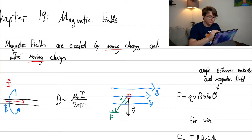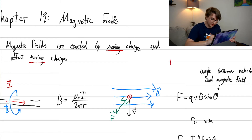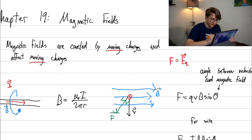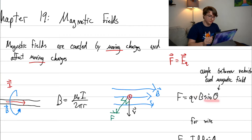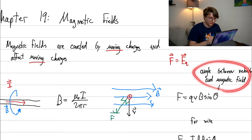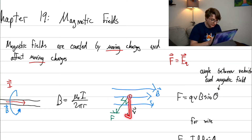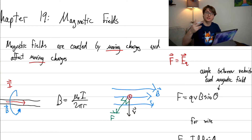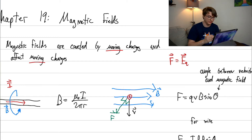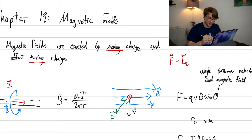There's also a different force law for magnetic fields compared to electric fields. For electric fields it's F = qE (vectors). For magnetic fields, instead of just the field times a charge, a velocity and an angle are also involved. The angle is between the velocity and the magnetic field. So if I have a magnetic field pointing right and a charge moving down, the force won't be in either of those directions — it'll be perpendicular to both, either out of or into the page.